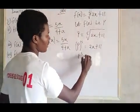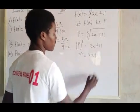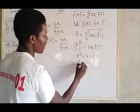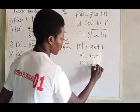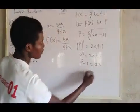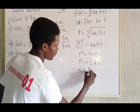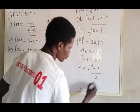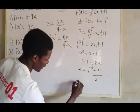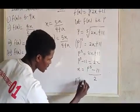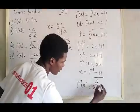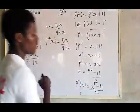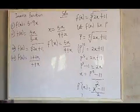Don't forget you are making X the subject of the formula. So P to the power five minus eleven equals two X, and therefore X equals P to the power five minus eleven, all over two. Now replace P with X for the final answer: F inverse of X equals X to the power five minus eleven, all over two.